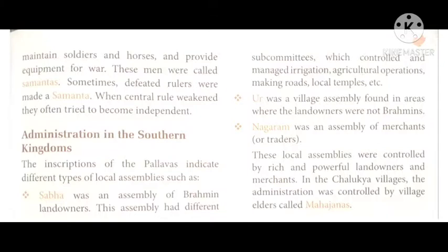This Sabha had different sub-committees which controlled and managed irrigation, agricultural operations, making roads, local temples, et cetera. So the members of this assembly had different roles through separate committees — managing the irrigation system, the state of agriculture, what resources needed to be made available, constructing roads, building and maintaining temples.